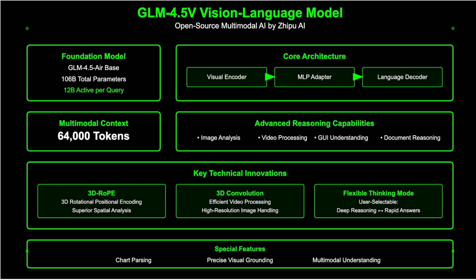Key technical innovations include 3D rotational positional encoding (3D RoPE) for superior spatial analysis, 3D convolution for efficient video and high-resolution image processing, and a flexible thinking mode for user-selectable deep reasoning or rapid answers.